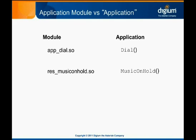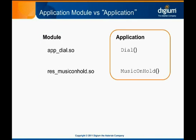This distinction between applications and resources is important when considering Asterisk architecture, but is less important when talking about Dial Plan configuration and setup. For the rest of the course, when we say application, we're referring to a named action in the Dial Plan. Most of these will be genuine application modules, but a few will technically be resource modules. This distinction is unimportant while we're not discussing the Asterisk core. Now let's move on to look at each category of Dial Plan application.